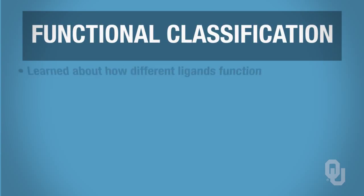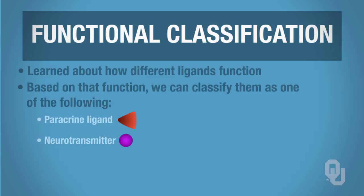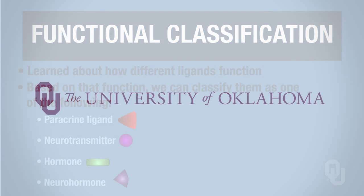So that takes us through how different ligands function. Based on that function, we classify them as either a paracrine ligand, a neurotransmitter, a hormone, or a neurohormone. That concludes part two of the intercellular communication of chemical messengers and the functional classification.